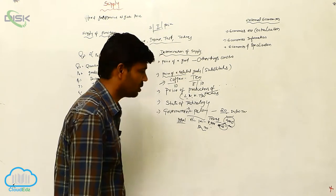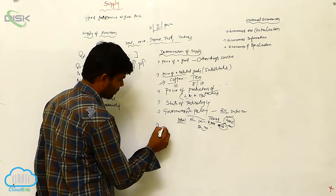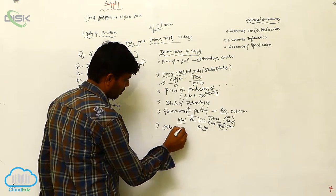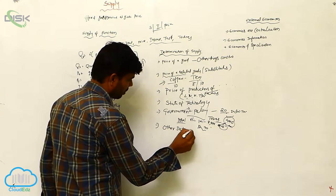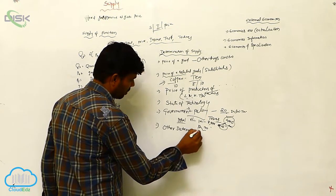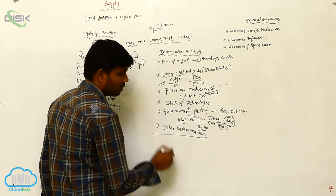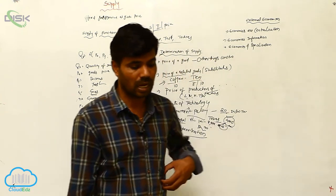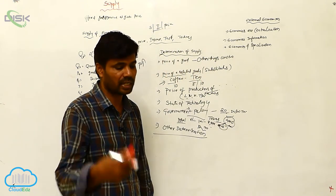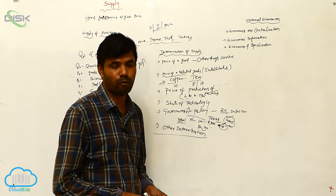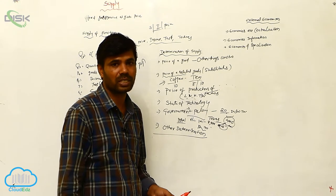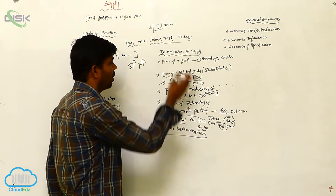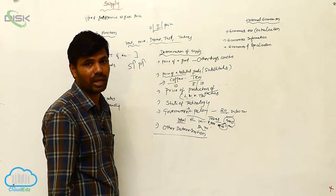The last determinant is other determinations — such as communications, goals, scientific factors, and other miscellaneous facts — which also influence the determination of supply.